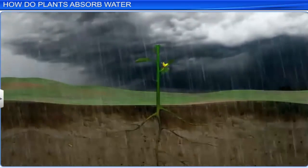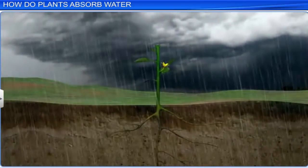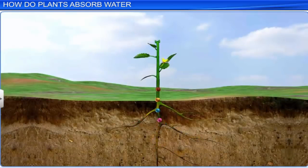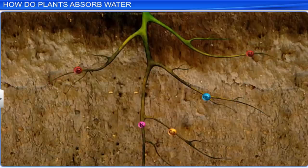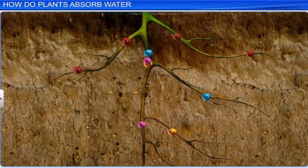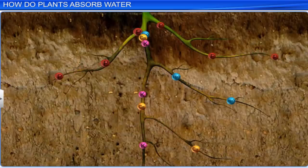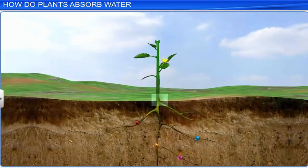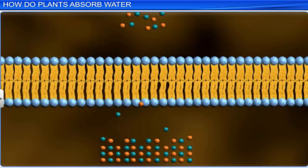When there is a heavy downpour of rain or when we water our plants in the garden, it is the roots that absorb water for the plant. More specifically, the millions of root hairs present on the root tips absorb both water and minerals from the soil. These root hairs not only increase the surface area for absorption, but also assist in water absorption through diffusion.